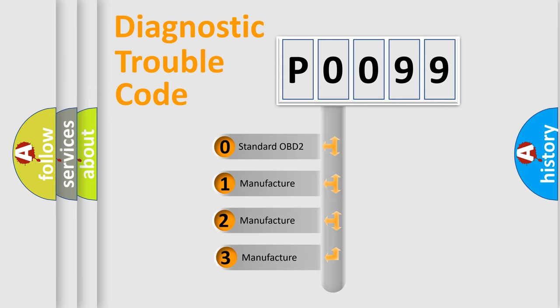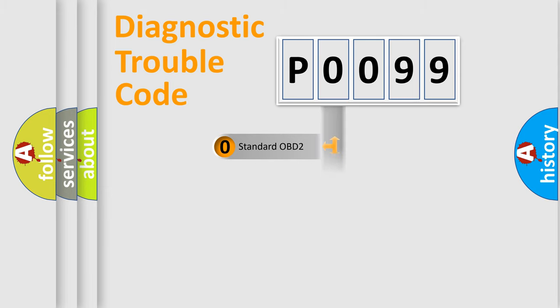If the second character is expressed as zero, it is a standardized error. In the case of numbers 1, 2, or 3, it is a more prestigious expression of the car-specific error.